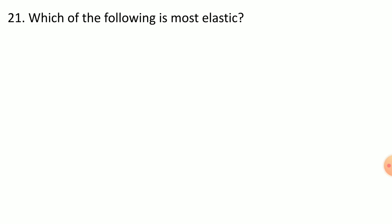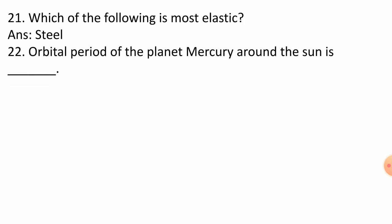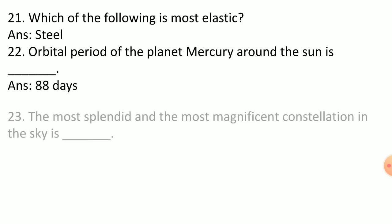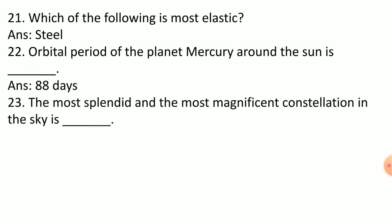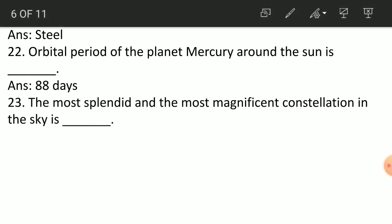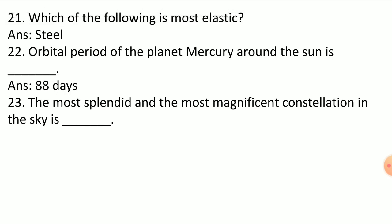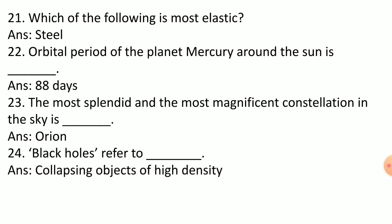Steel is the most elastic material. Orbital period of the planet Mercury around the sun is 88 days. The most splendid and magnificent constellation in the sky is Orion.